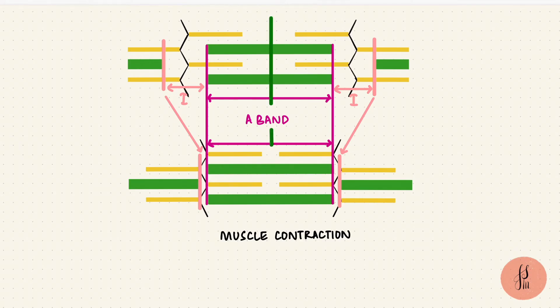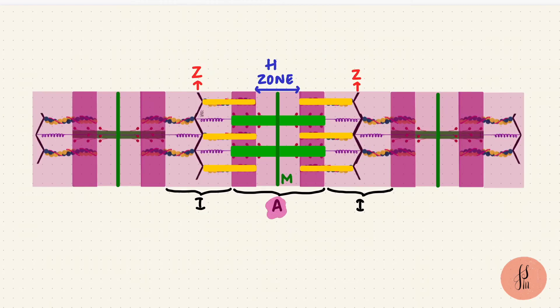Again, when the sarcomere shortens during muscle contraction, the M line obviously will not change its position, but the H zone reduces in size. So we've got A bands, I bands, Z lines or Z lines, the H zone, and the M line.